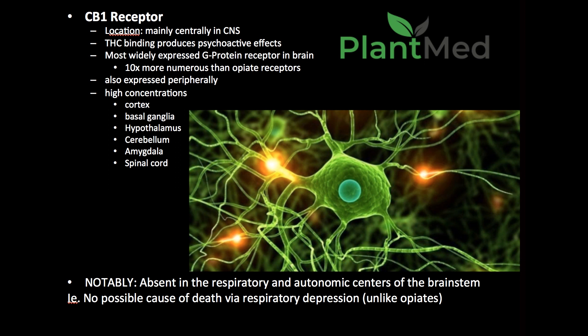The CB1 receptor is the receptor that is bound directly by THC and is responsible for the psychoactive effect of THC — the recreational high that people look for when smoking cannabis recreationally. There are 10 times more CB1 receptors in our brain than there are opiate receptors, which indicates the importance of this system in our body.